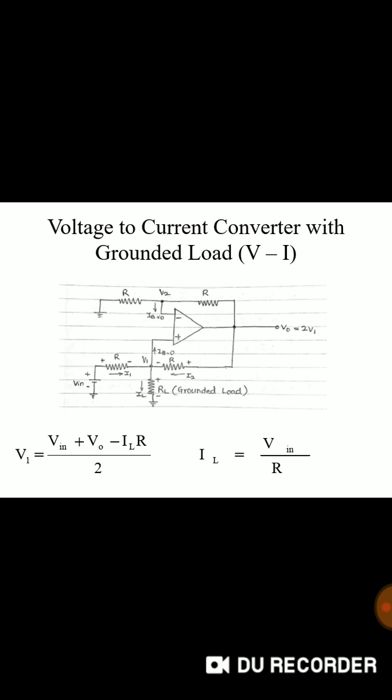Now we have obtained expression for V1. As op-amp is connected in non-inverting mode voltage gain will be equal to 1 plus R upon R which is 2 and output voltage is twice of V1. Substituting those values we can say that VO is equal to 2 into VIN plus VO minus IL R upon 2. Therefore if we put all the values eventually we can get that IL is nothing but VIN upon R.